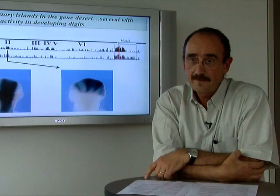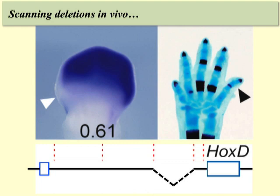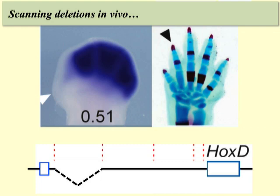We assessed the function of these regulatory islands under physiological conditions in vivo by generating a set of contiguous deletions as well as combinations thereof. When we delete this part of the gene desert, expression in digits goes down to 60% and a subtle defect appears in newborns. If we remove another piece of the desert, expression goes down to 50%, and yet another subtle defect appears.